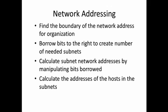Key points: first, find the boundary of the network address for the organization you are working with — you need to know the network address and the subnet mask. Then, borrow bits to the right of that subnet mask to create the number of subnets needed. If you need two subnets, borrow one bit. If you need four, borrow two bits. If you need eight, borrow three bits. If you need 16, borrow four bits. Calculate out the possible values and determine what those subnets can be.